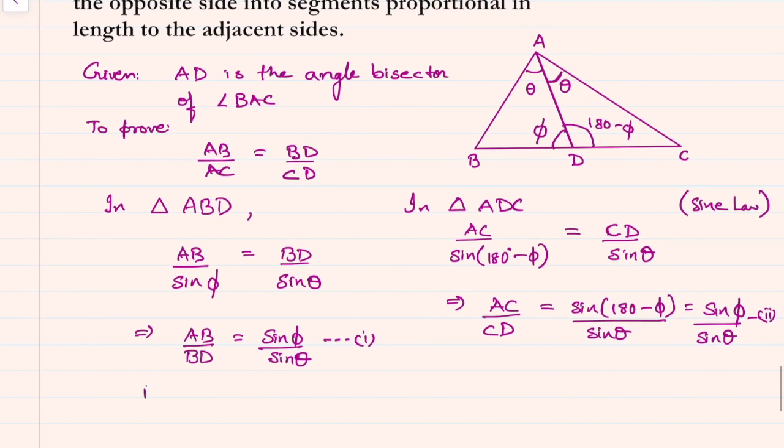And hence rearranging, we get AB by AC is equal to BD by CD.